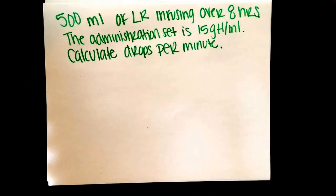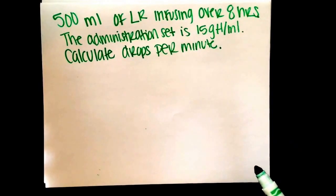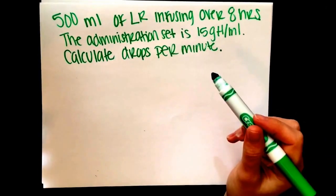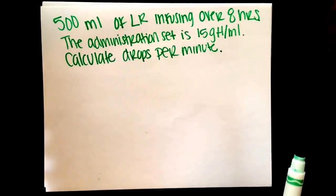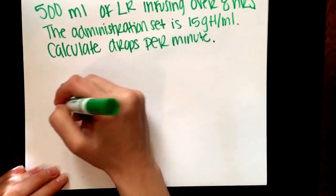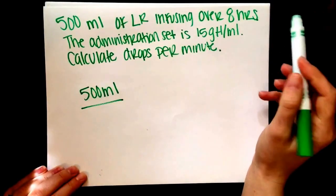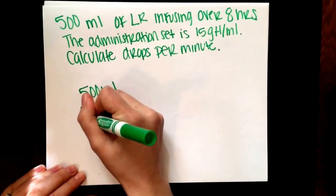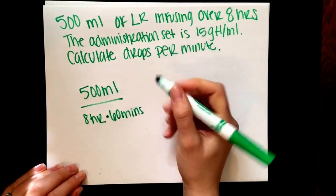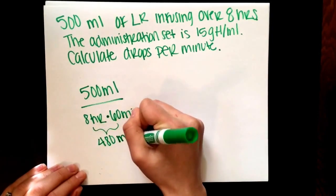Here is an equation to calculate drops per minute. Let's say you receive an order that says 500 milliliters of lactated ringers infusing over 8 hours. The administration set is 15 drops per milliliter. Calculate drops per minute. In our equation we take our volume, which is 500 milliliters, and we divide that by our time. We know that our time is our hours multiplied by 60 minutes. So we have 8 hours times 60 minutes, which equals 480 minutes.